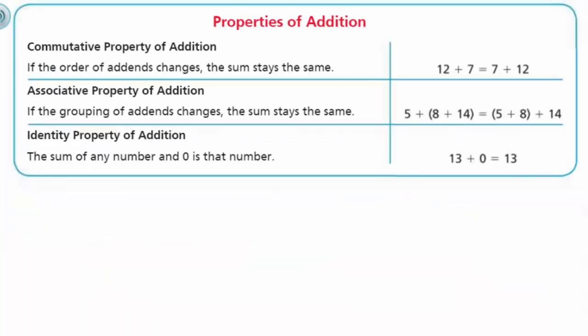Let's go ahead and look at some of these. First, we have the properties of addition. It says we have the commutative property of addition. It says, if the order of addends changes, the sum stays the same. And if you look at our example over there, we have 12 plus 7 equals 7 plus 12. Addends are just those numbers that we use to add together to give us a sum. The 12 is an addend, the 7 is an addend.